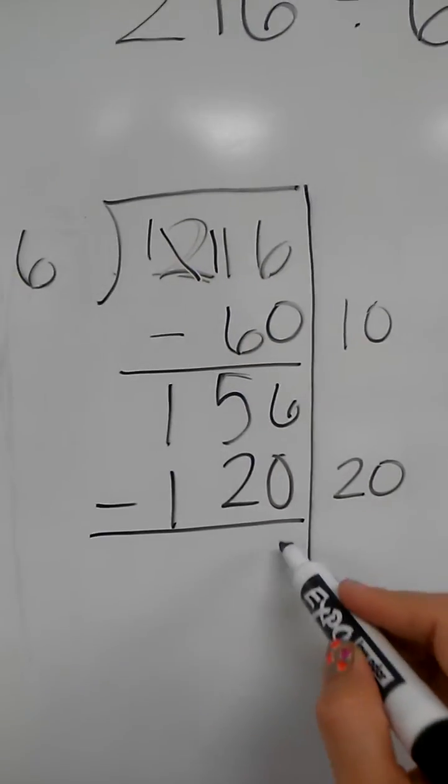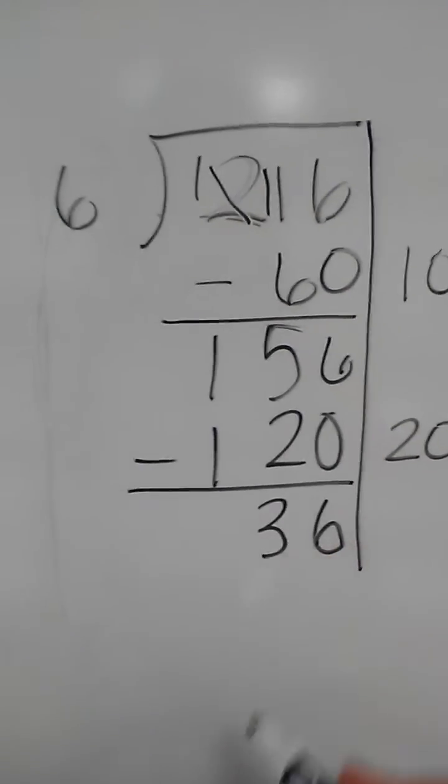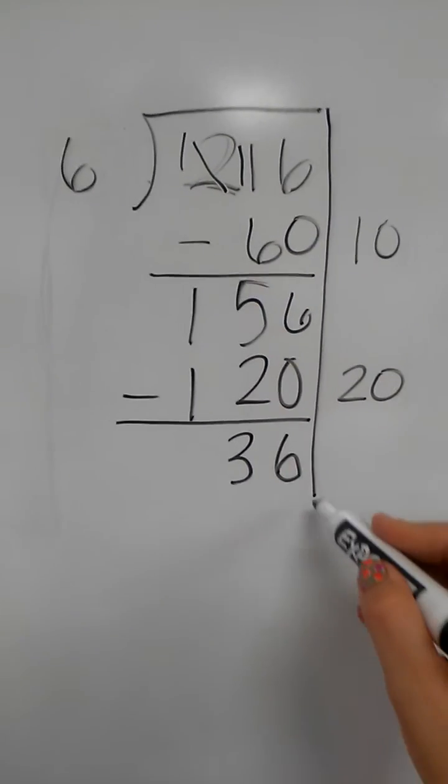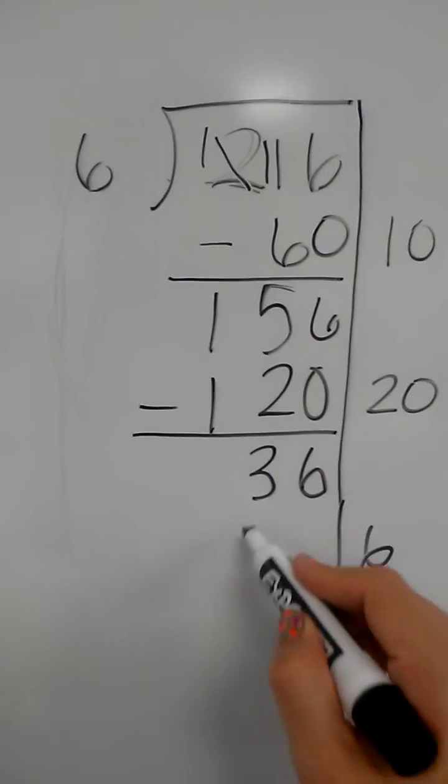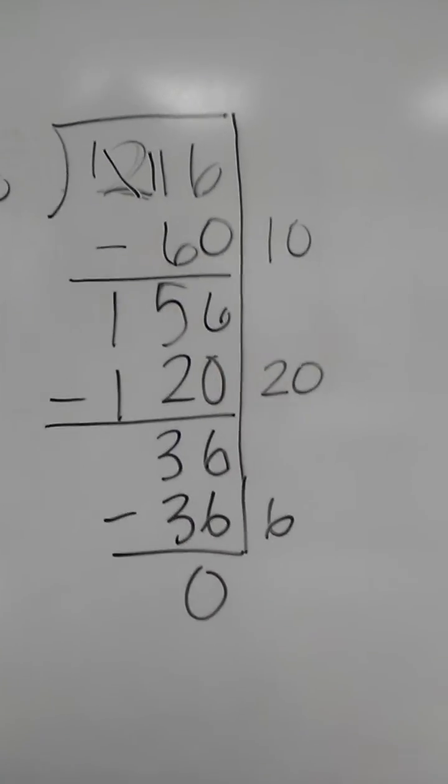We subtract, 6 minus 0, 5 minus 2, so I'm left with 36. And kids should know their 6 times tables well enough to know that 6 times 6 is 36 and they have 0 left over.